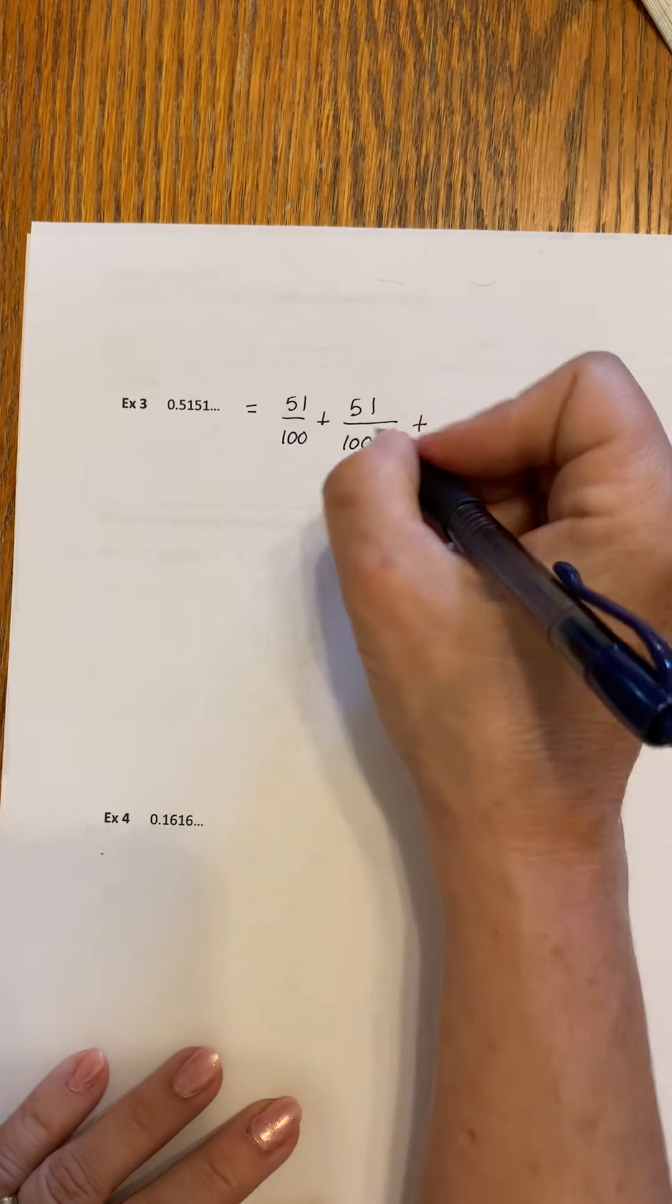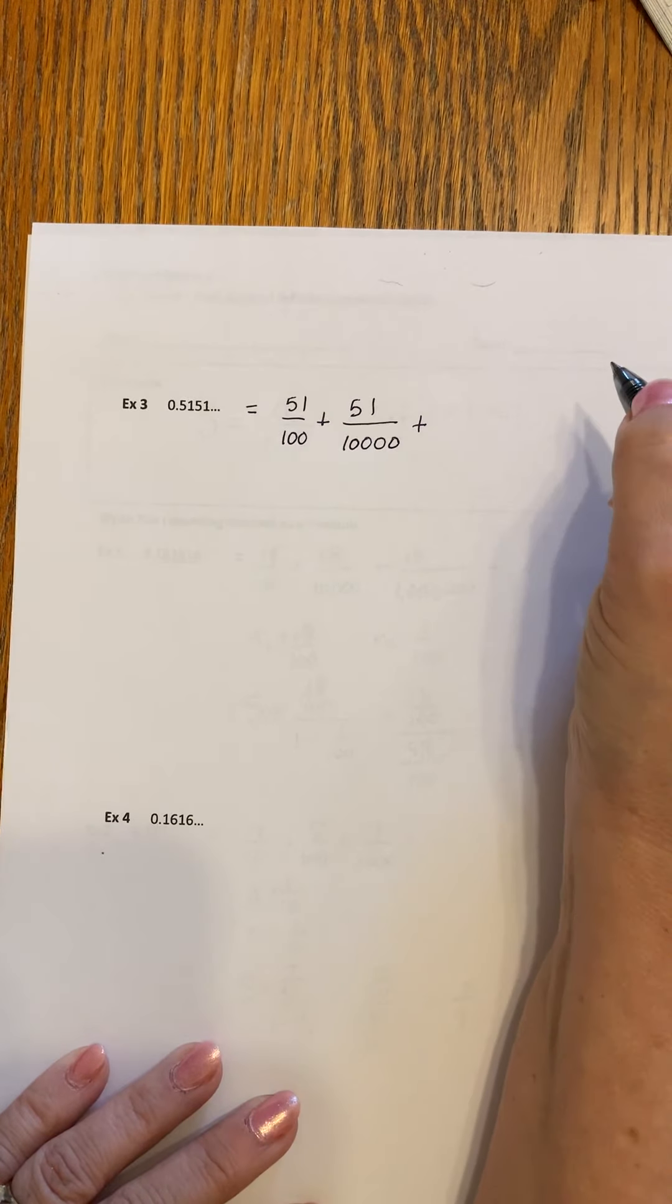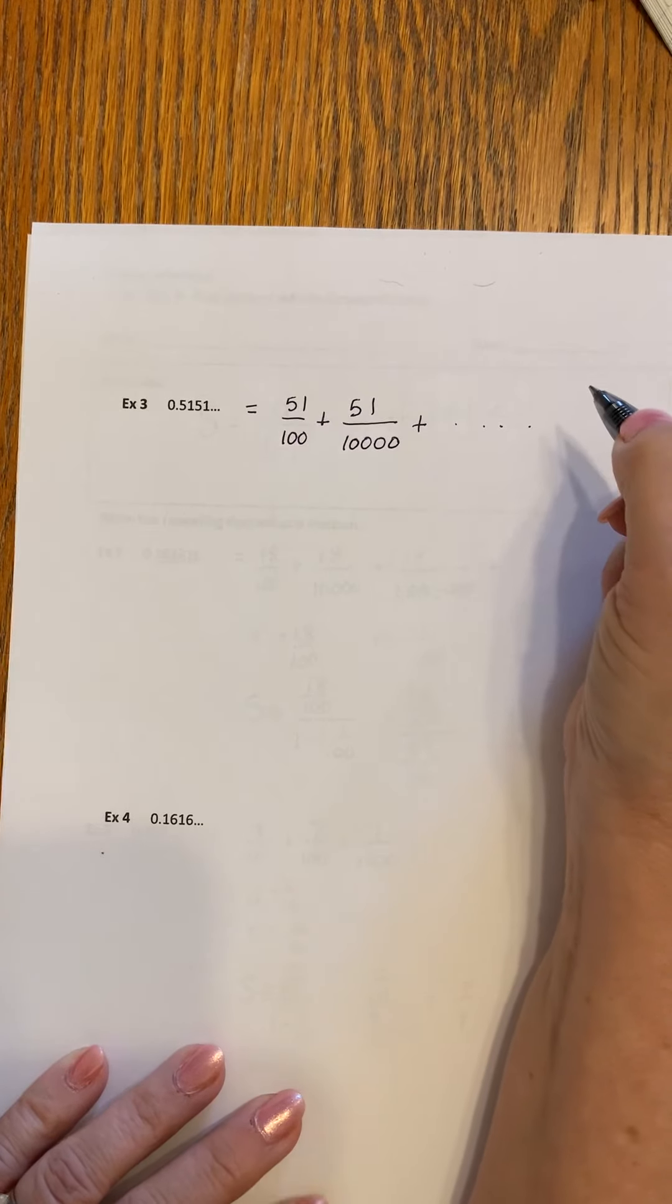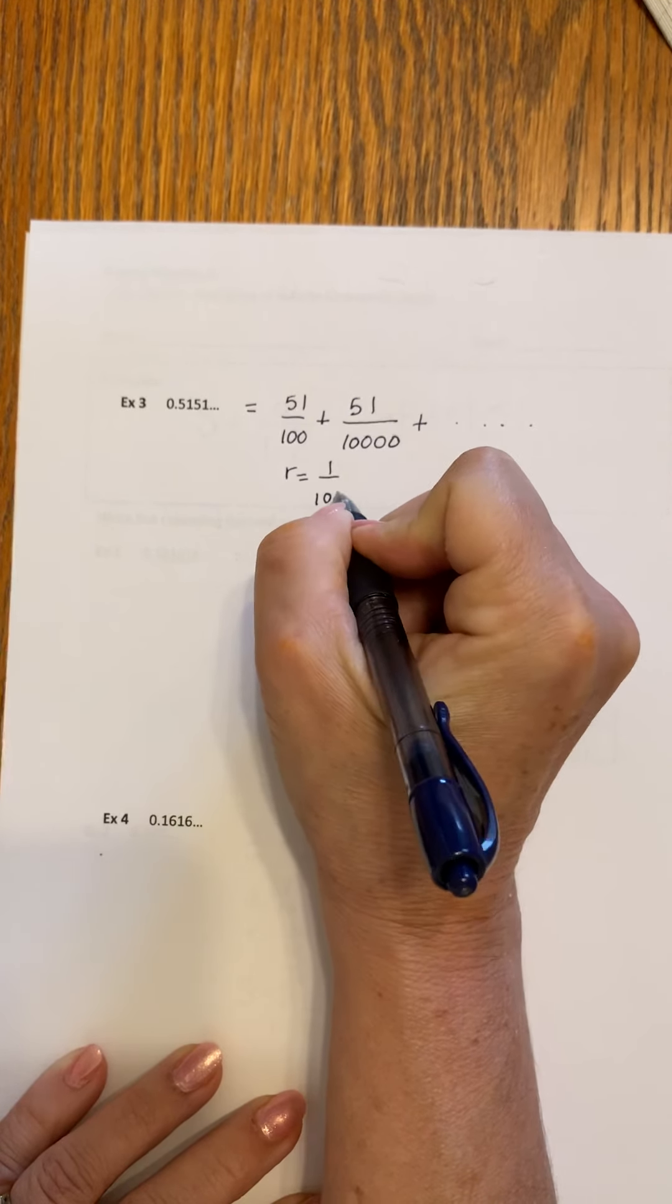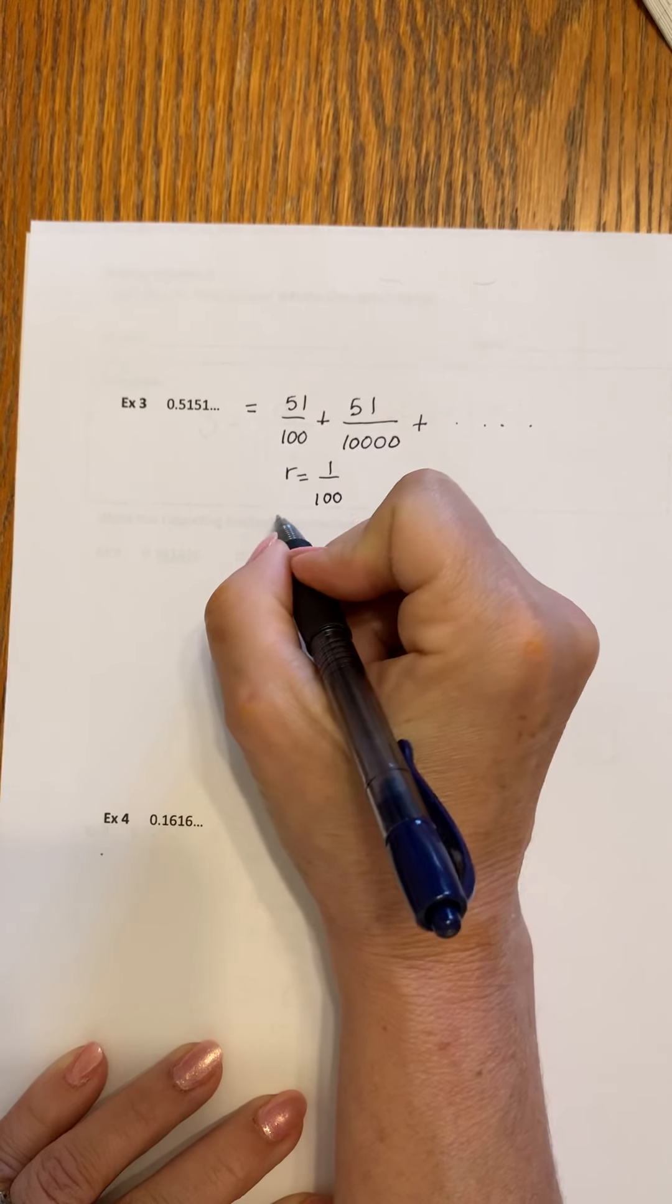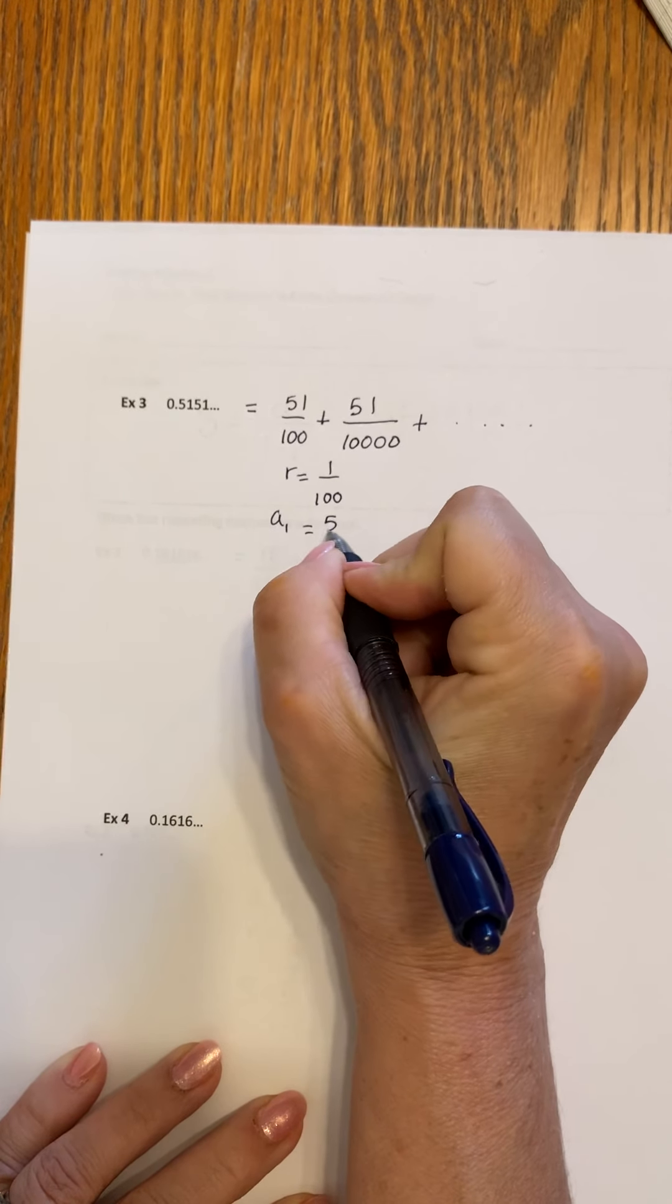I only added one. No wonder. Sorry guys. I was confused myself for a few seconds, but I found myself. r is 100. 1 over 100. And a1 is 51 over 100.